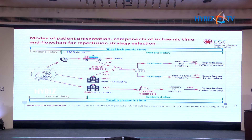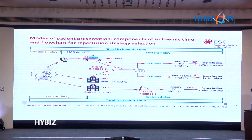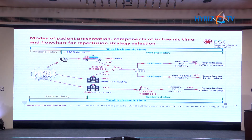The modes of patient presentation, components of ischemic time, and flowchart for reperfusion strategy selection are outlined. From EMS or non-PCI centre: if fibrinolysis to PCI transfer takes less than 10 minutes and STEMI-to-wire crossing is less than 120 minutes, go for primary PCI with wire crossing under 90 minutes. If delay exceeds 120 minutes, fibrinolysis should be started within 10 minutes. If the patient presents directly to a PCI centre, wire crossing should occur within 60 minutes.